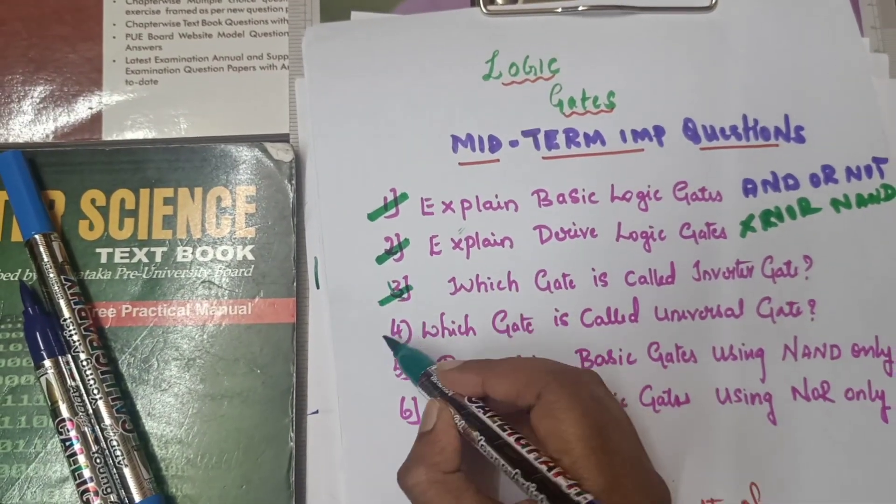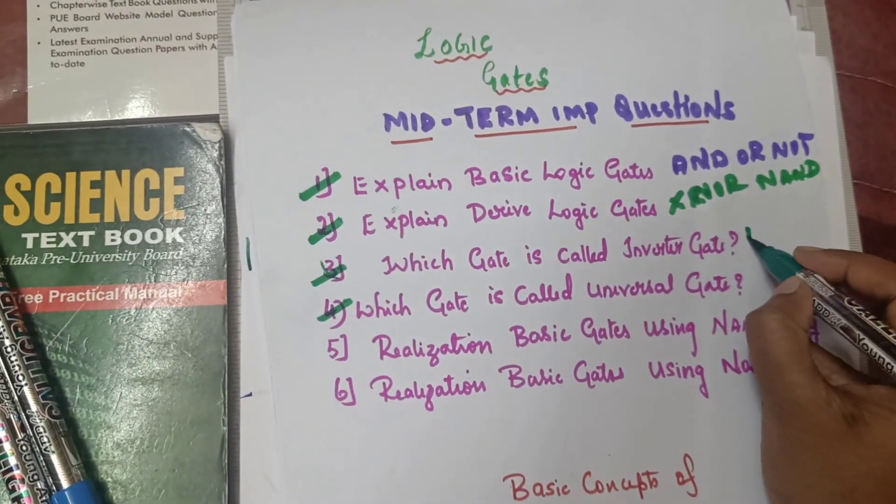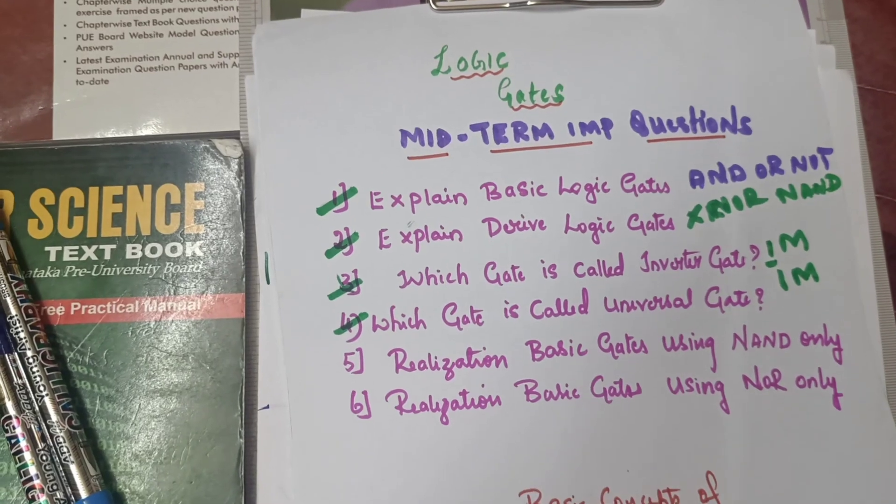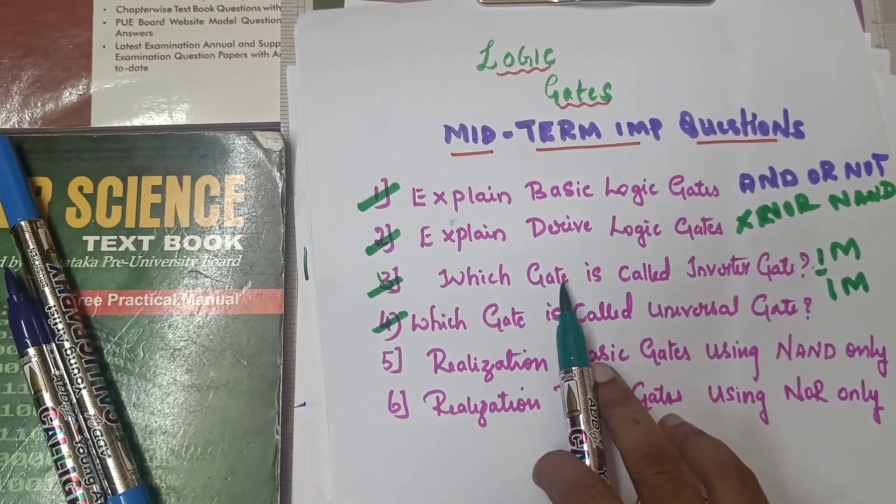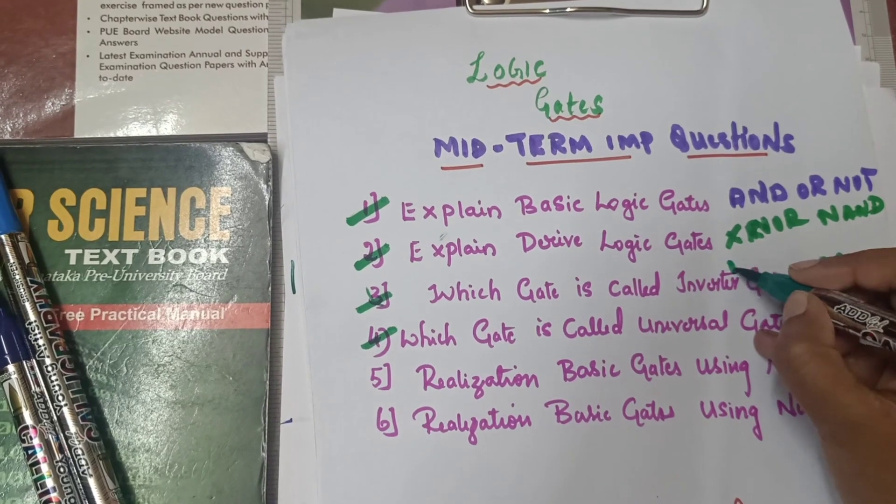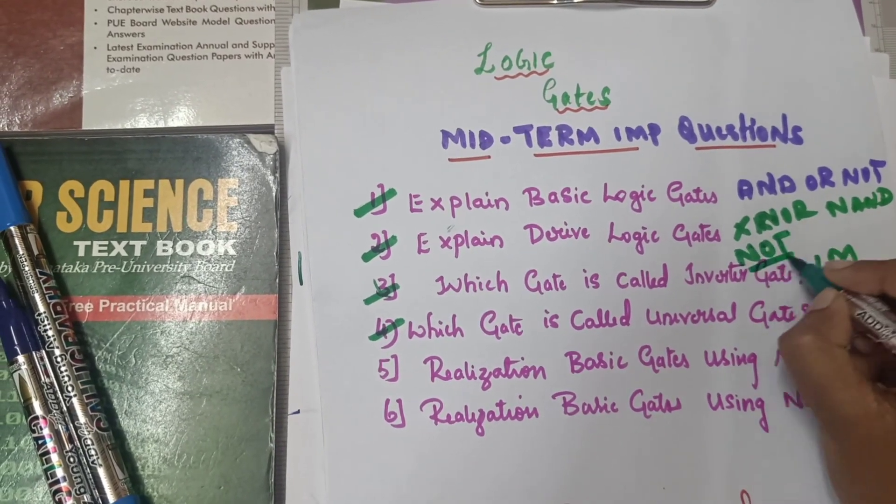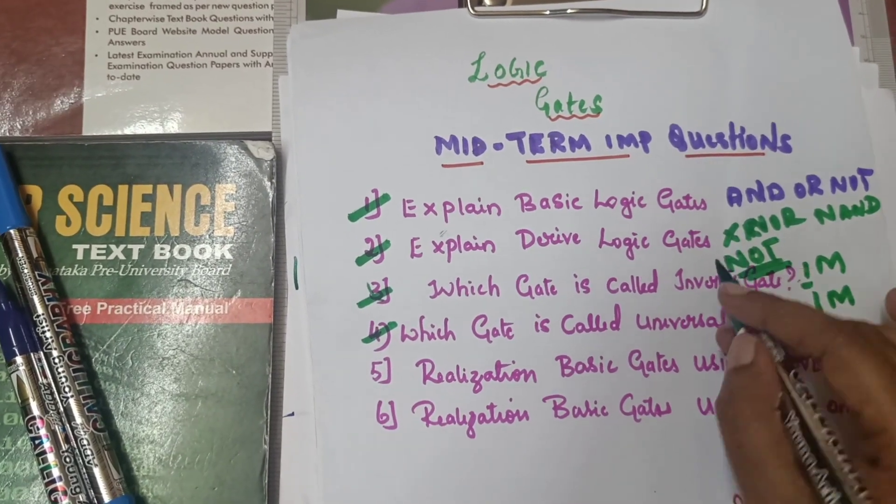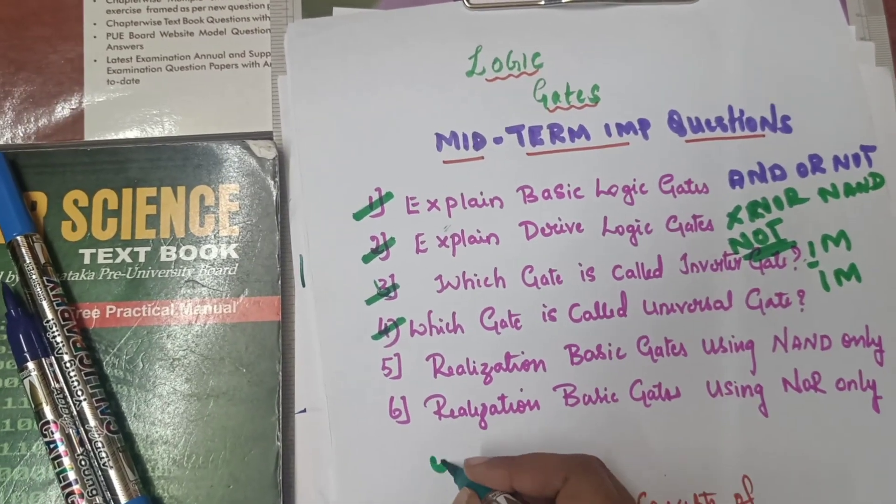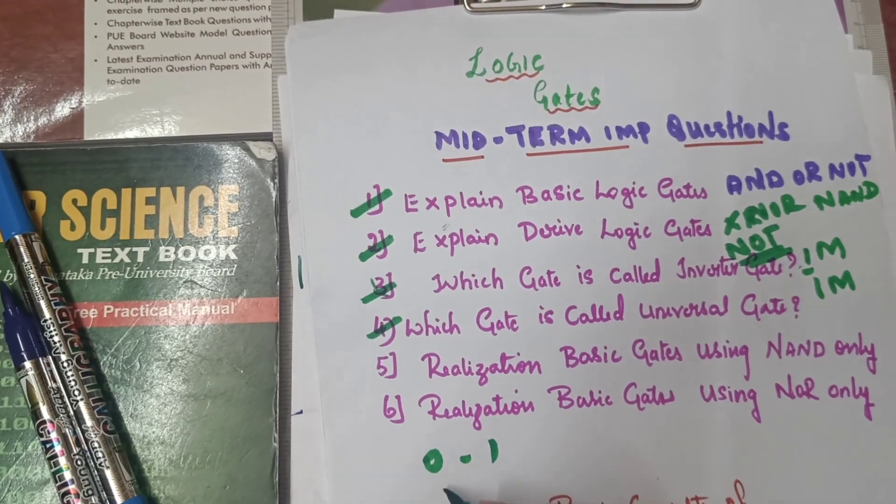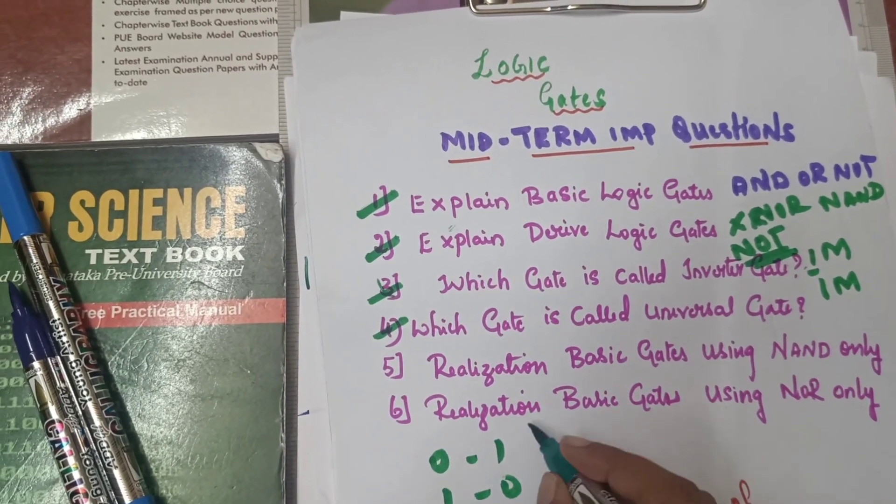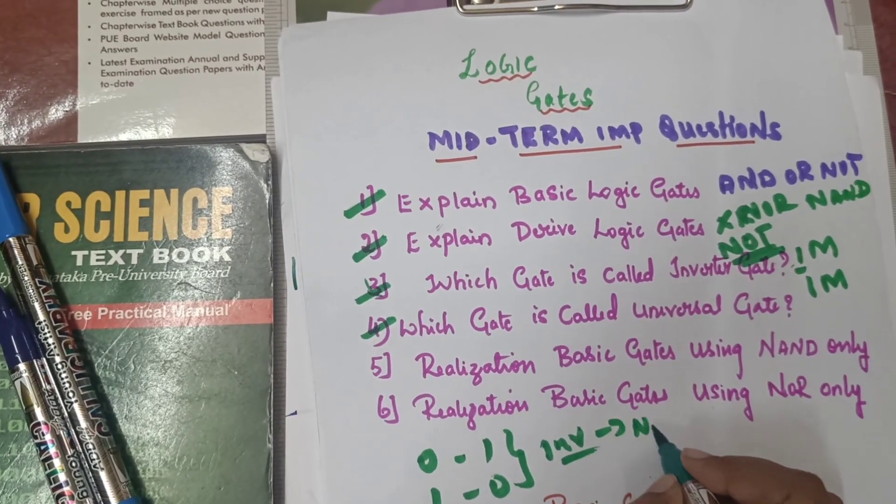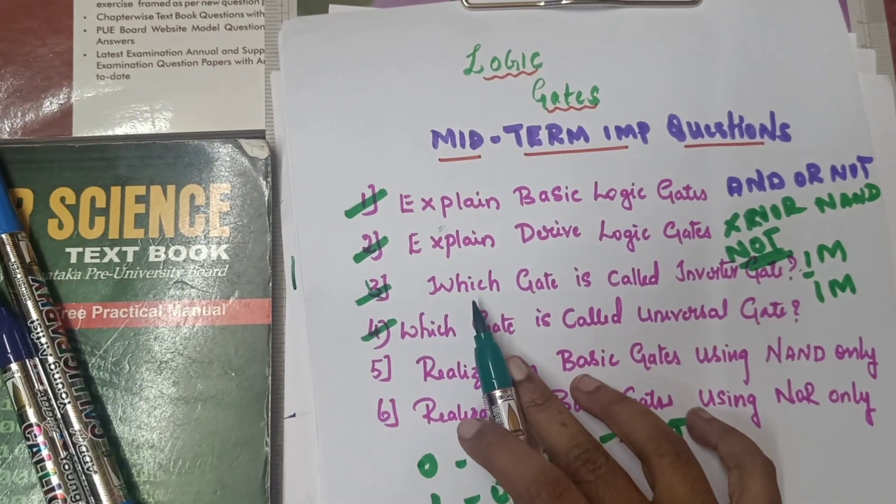This is the one-one mark question. In this chapter, we will talk about the important things. Inverter gate - NOT gate is inverter gate, because the input is the same as NOT gate. The input is the opposite output as NOT gate.